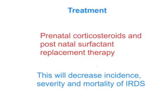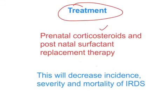For treatment of IRDS in premature babies, prenatal corticosteroids are given, which help in differentiation of pneumocytes into type 1 and type 2 pneumocytes, so that type 2 pneumocytes can synthesize and secrete surfactant sufficiently. Postnatal surfactant replacement therapy is also done. The combination of prenatal corticosteroids and postnatal surfactant replacement therapy decreases the incidence, severity, and mortality of IRDS. Thanks for watching and see you in my next video.